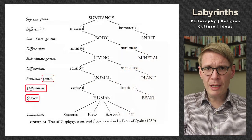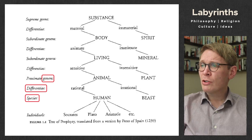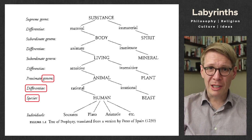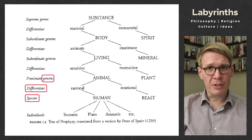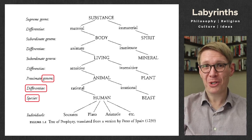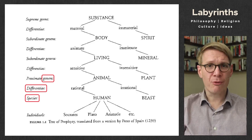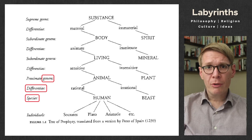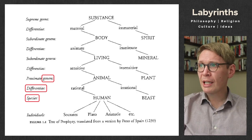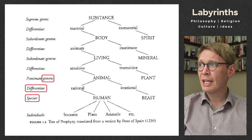Here is Porphyry's Tree, and I've indicated the three key essential predicables: genus, difference, and species. Let's take a little walk through this. We start at the top with substance. This idea of substance is important for Aristotle, as we see in his discussion of the categories. Substance is the first of the ten categories, the other nine being what he calls accidents. Here, we're starting with substance and then differentiating it — identifying what is the specific difference that distinguishes things that are substances but are different from each other. In this case: material and immaterial. If something is material, it is a body; if it is immaterial, for Porphyry in the 13th century, it is a spirit.